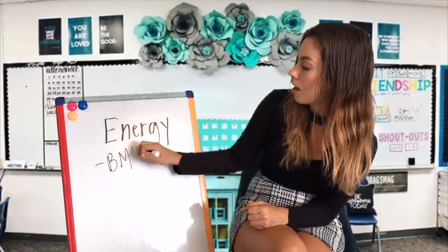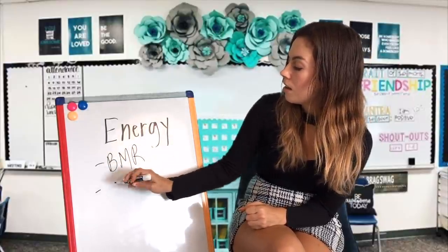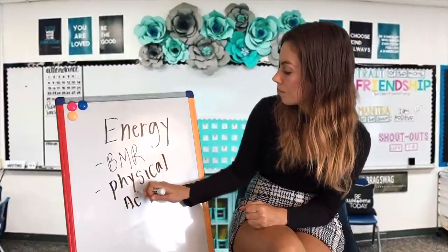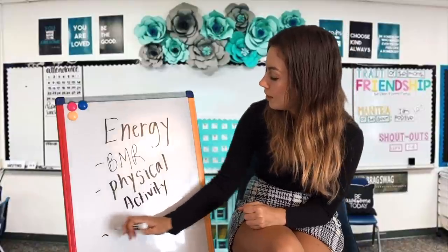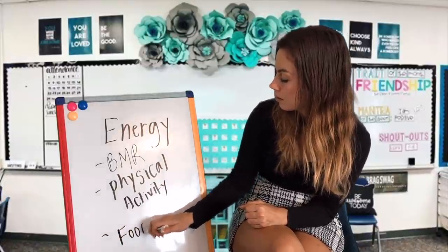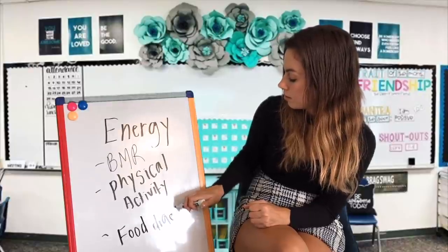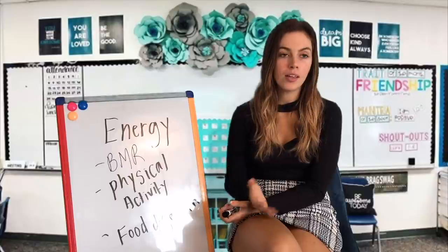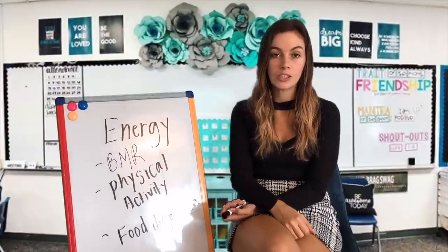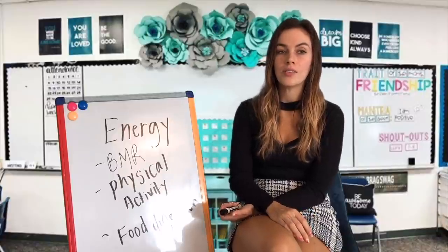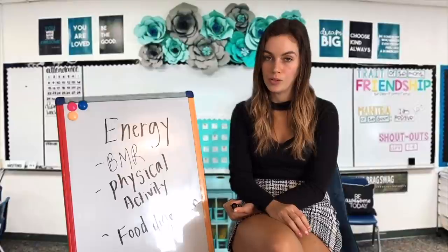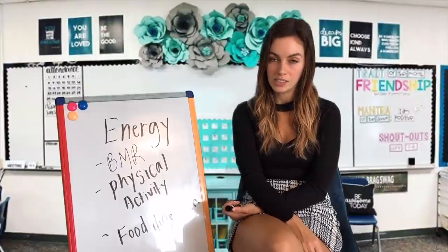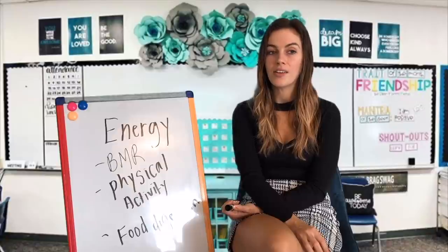So our BMR is our basal metabolic rate. We also need energy for physical activity and for digestion. What we use to calculate energy in food is a calorie — it's just a unit used to measure energy in food. A kilocalorie is the unit of energy commonly used to express energy value of food. Food energy is the amount of energy in food that is available through digestion, and it indicates its value to the body as fuel.